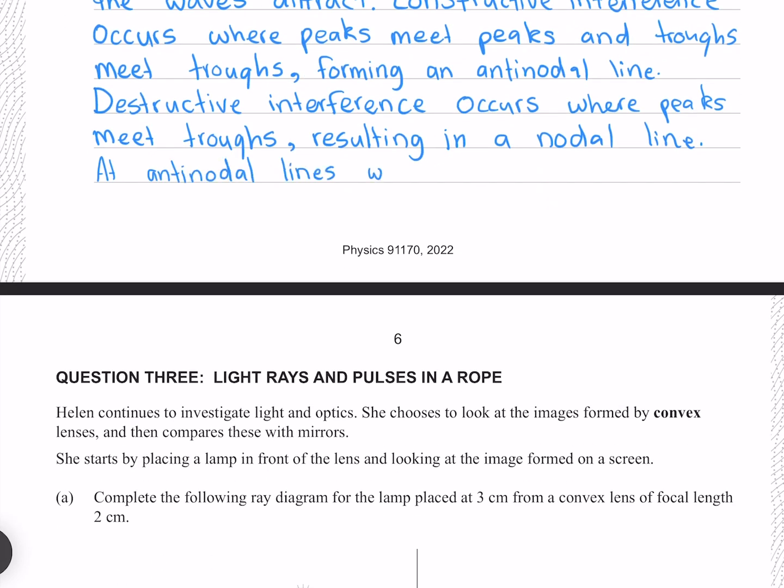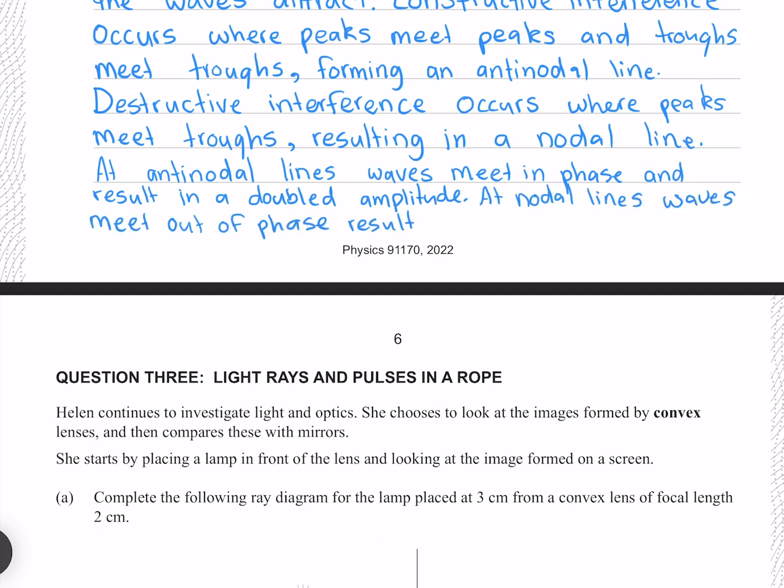At antinodal lines, waves meet in phase and result in a doubled amplitude. At nodal lines, waves meet out of phase, resulting in cancellation.